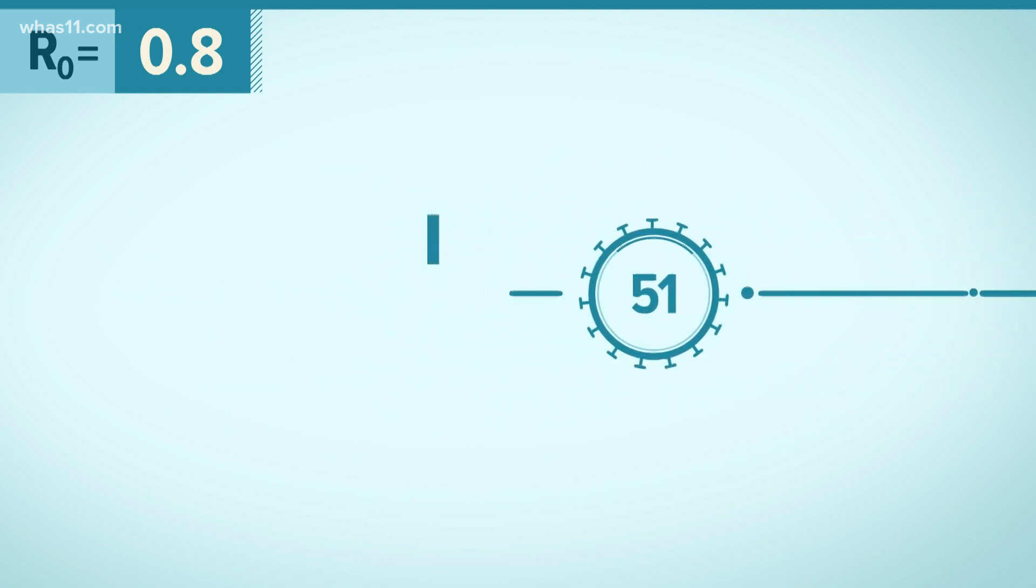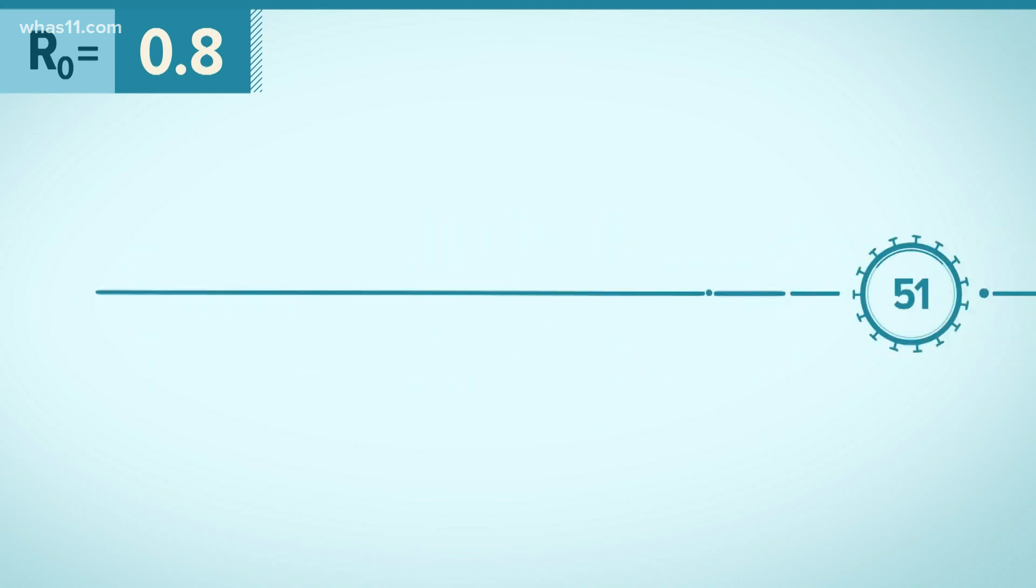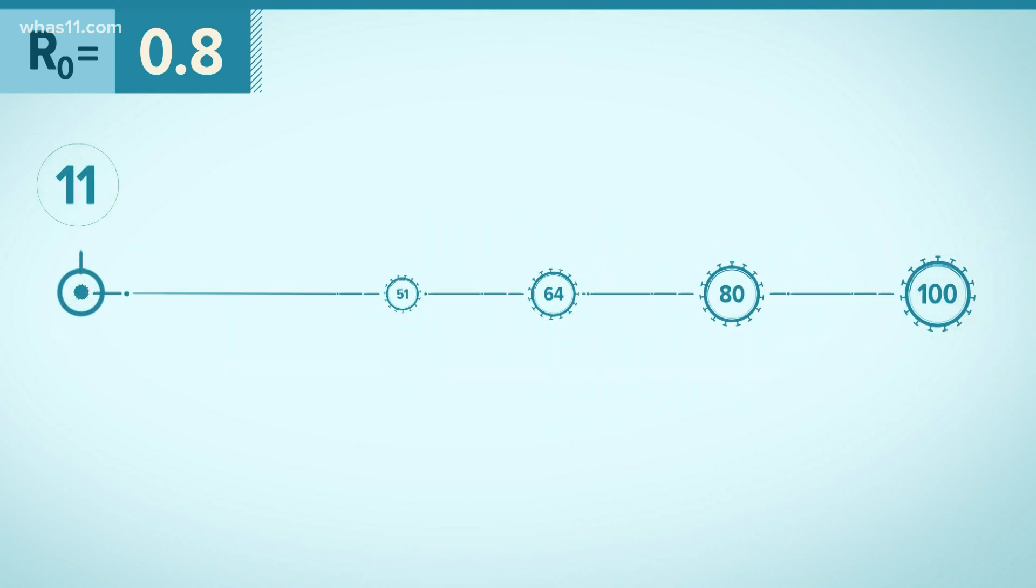So after about two months' time, the number of newly infected people would fall from 100 to 11. In a little over two months' time, it's basically gone.